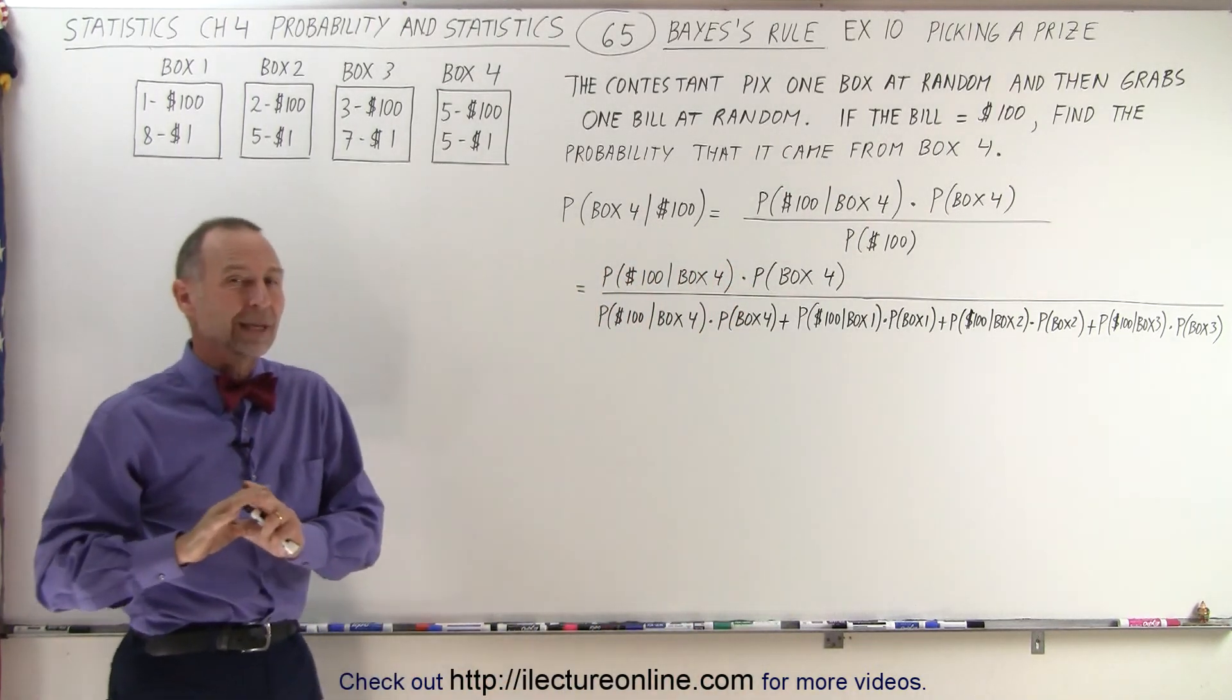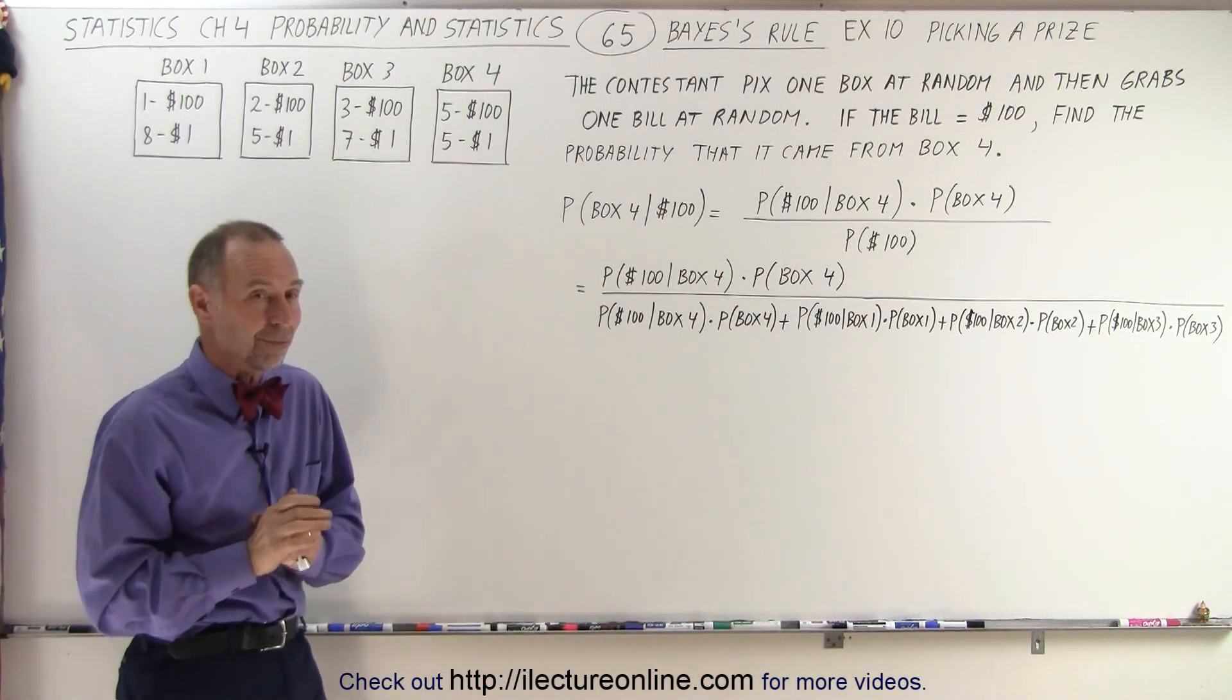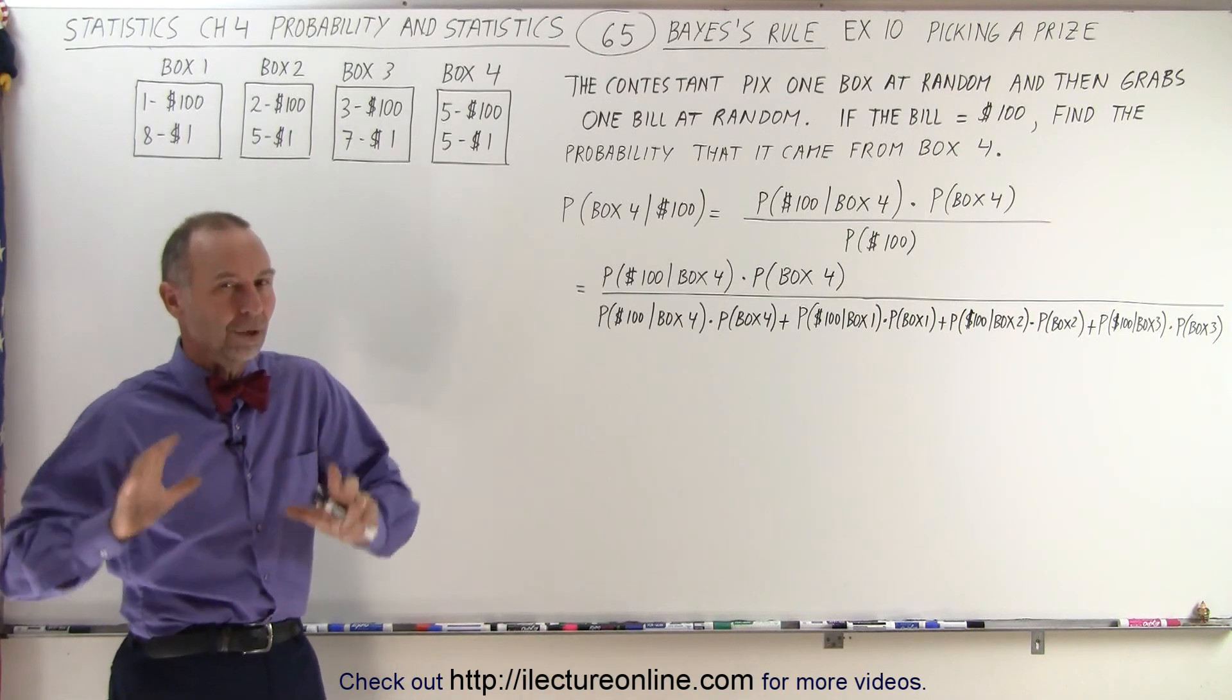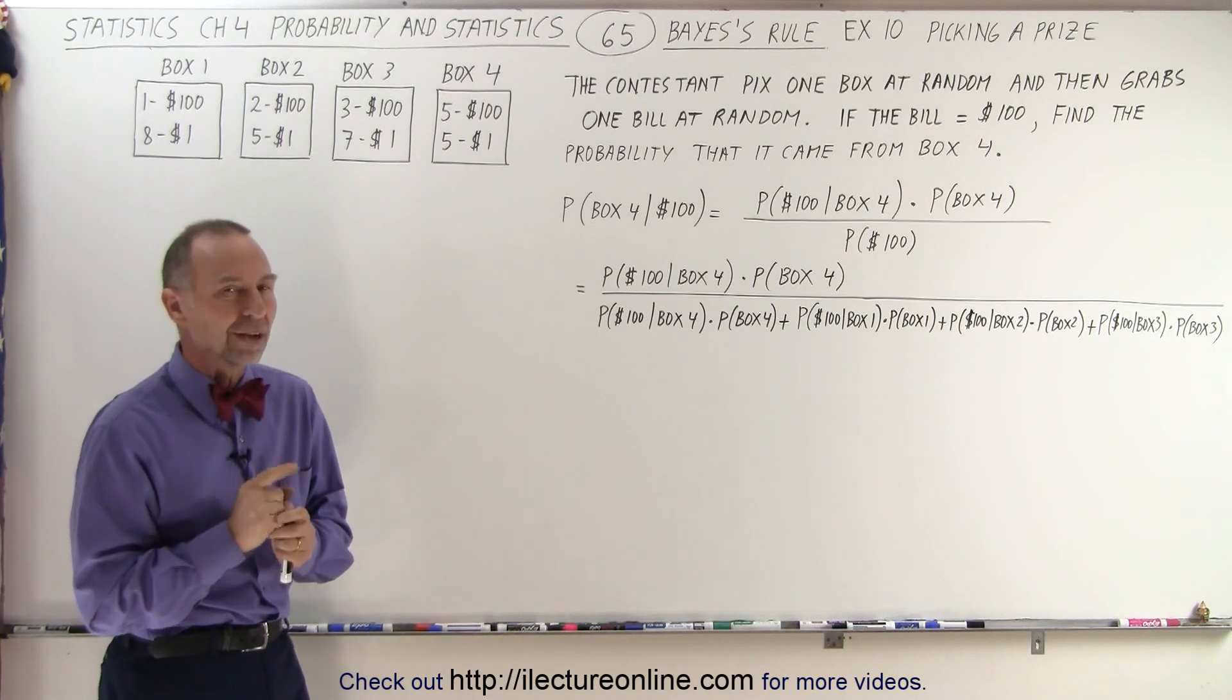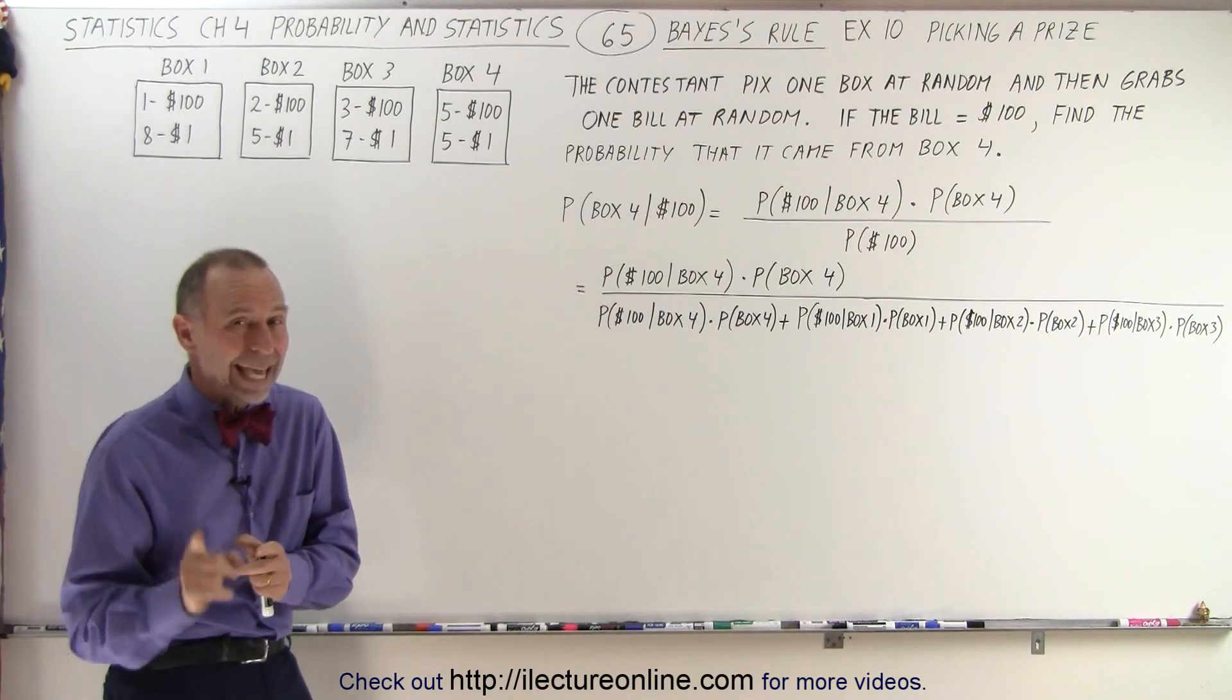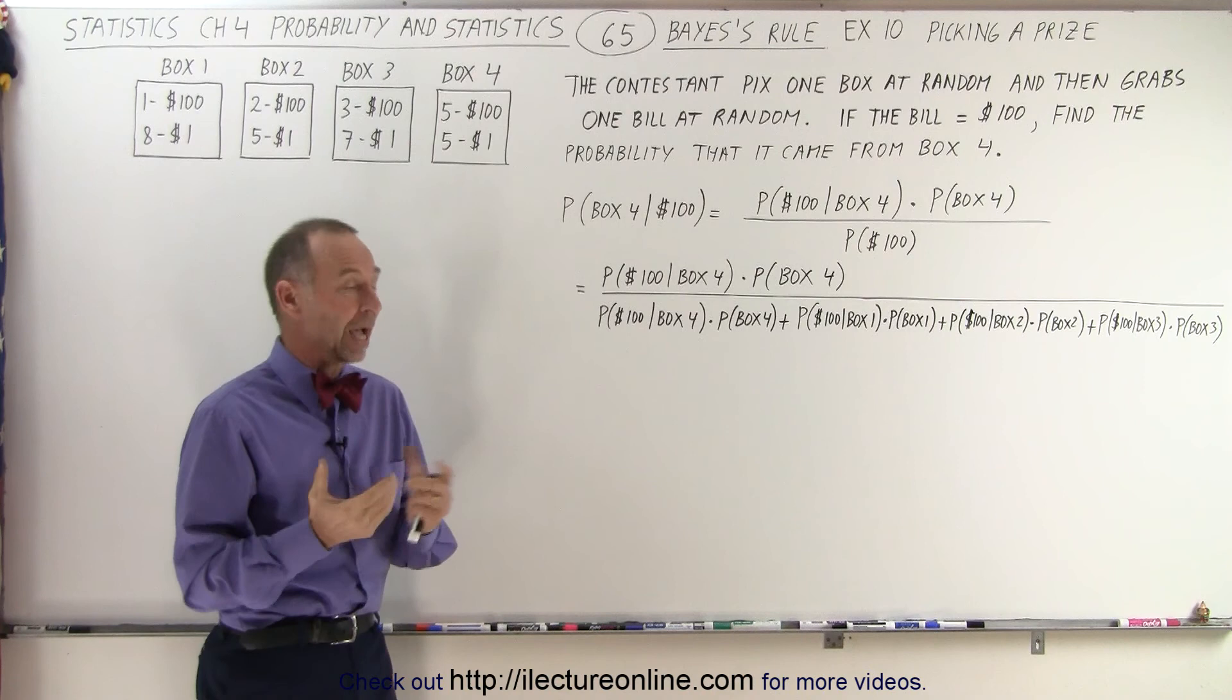Now we're supposed to find the probability that it came from box four. So in other words, we cannot see which box the contestant picked. We just know that the contestant picked one at random, went in and picked a bill at random. We looked at it. It's a $100 bill. Now we're trying to find the probability that that bill came from box four. How do we do that?